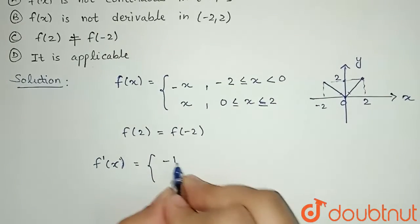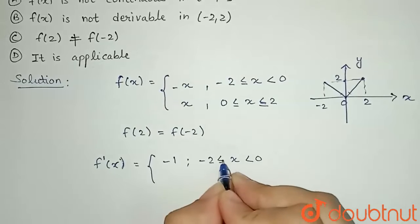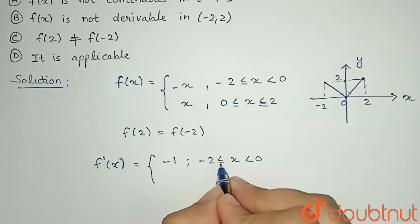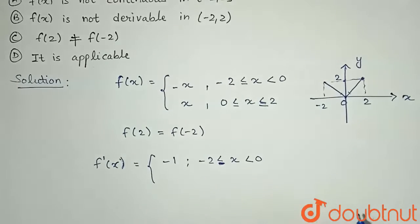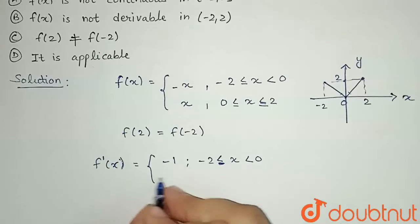See, if I differentiate, it will be minus 1 for minus 2 less than equal to x less than 0. And see, whenever we take differentiation, this equality side goes. So this will be just minus 2 less than.